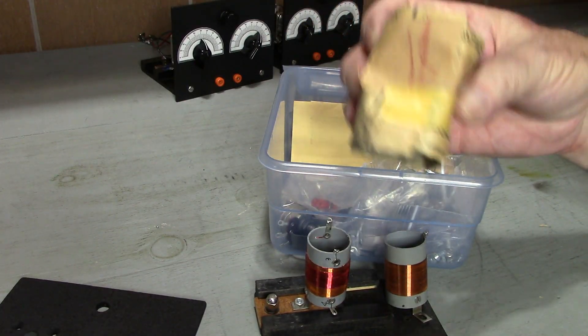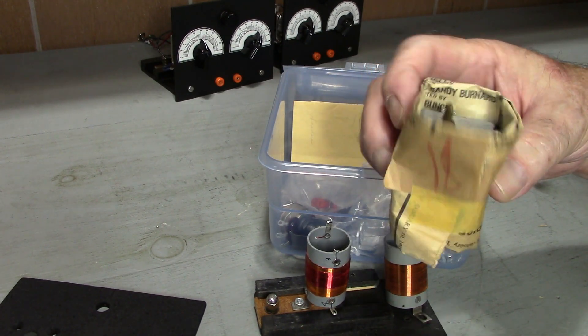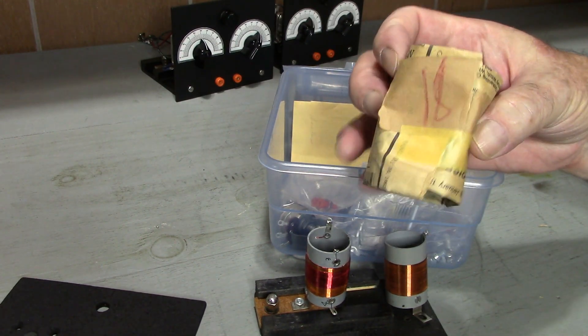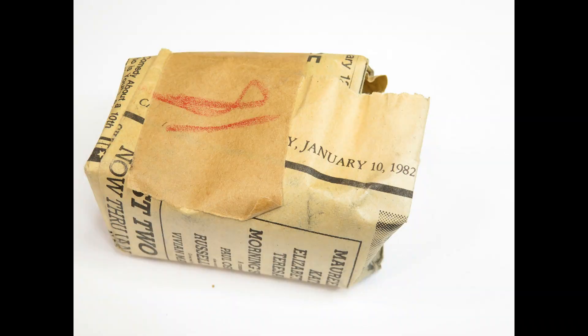Next is one of the variable capacitors wrapped up in newspaper with the number 18 written on it. It's very fortunate that this newspaper survived. The newspaper gives us the date of the kit. January of 1982.